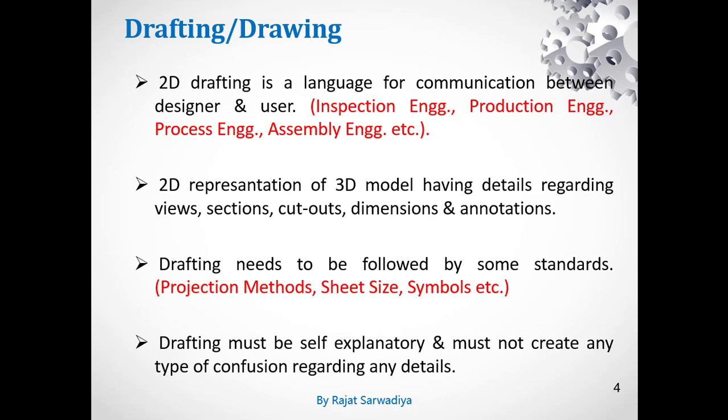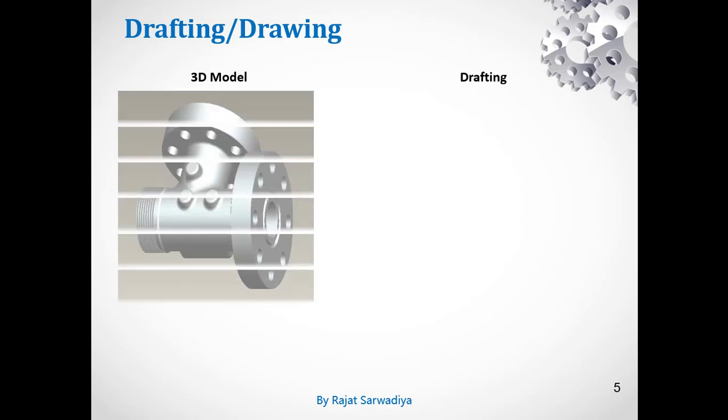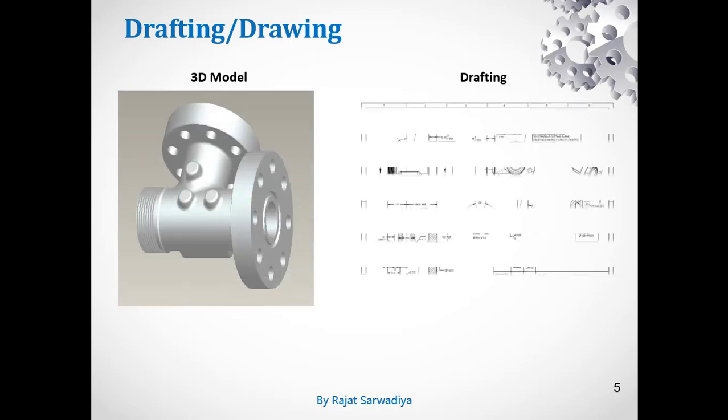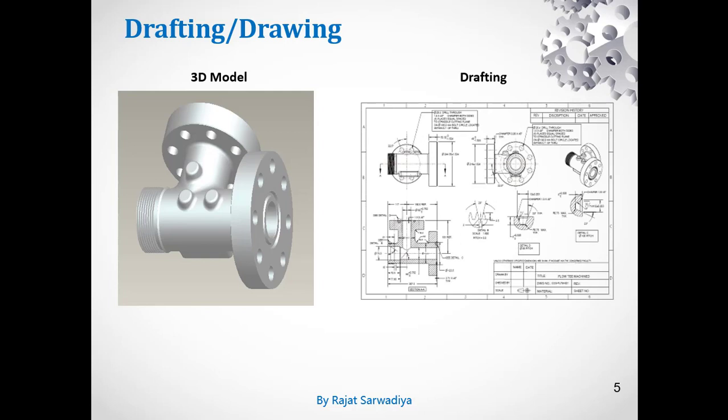In today's scenario, you may create drawings in one country and manufacture the product in another. If you are in the same plant, direct communication is possible, but across countries, everything must be captured in the drawing. This is what drafting is — you take a 3D model, create 2D views, and add all dimensions, annotations, and symbols to explain the manufacturing, inspection, and assembly processes completely.